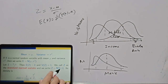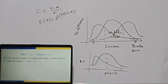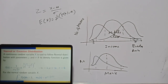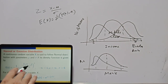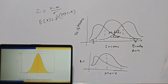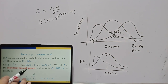The PDF of the standard normal variable Z is given a special notation φ(z) = (1/√(2π)) · e^(−z²/2), obtained from the general normal PDF by substituting μ = 0 and σ = 1. The graph of φ(z) is symmetric about z = 0, which corresponds to x = μ in the original distribution. The point z = 1 corresponds to x = μ + σ, and z = −1 corresponds to x = μ − σ.